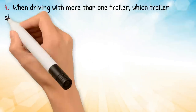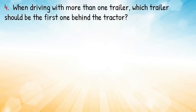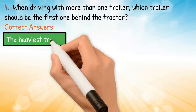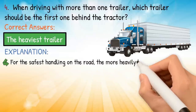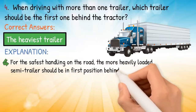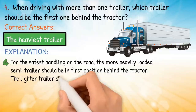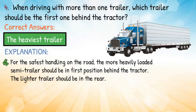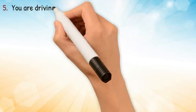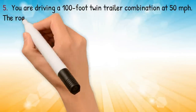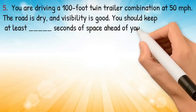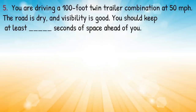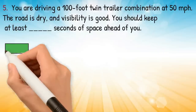Question four: when driving with more than one trailer, which trailer should be the first one behind the tractor? Correct answer: the heaviest trailer. Explanation: for the safest handling on the road, the more heavily loaded semi-trailer should be in first position behind the tractor; the lighter trailer should be in the rear. Question five: you are driving a 100-foot twin trailer combination at 50 miles per hour — the road is dry and visibility is good — you should keep at least blank seconds of space ahead. Correct answer: 11 seconds.